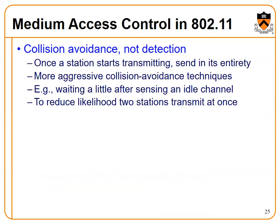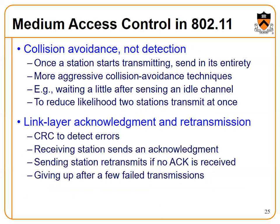In medium access control with collision avoidance, one station starts transmission and sends entirely. A more aggressive technique involves waiting a little after the channel goes idle to reduce the likelihood of two stations transmitting at once. Link-layer acknowledgements use CRC to detect errors. The receiving station sends an acknowledgement; the sending station retransmits if no acknowledgement is received after a few failed transmissions. This will continue in the next lecture.